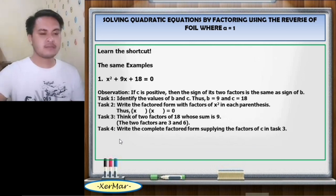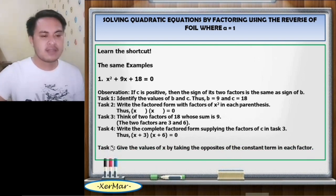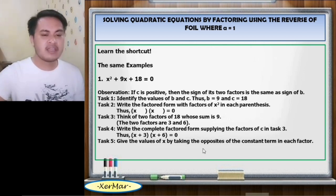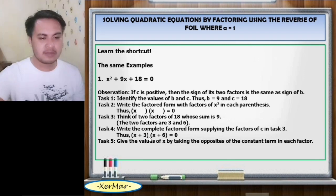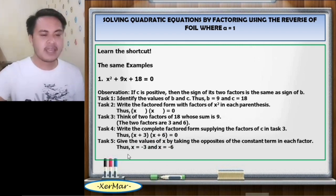Task 4: Write the complete factored form supplying the factors of c from Task 3. So we have the quantity of x plus 3 times the quantity of x plus 6 equals 0. Task 5: Give the values of x by taking the opposites of the constant term in each factor. The constants are positive 3 and positive 6, so x equals negative 3 and x equals negative 6.